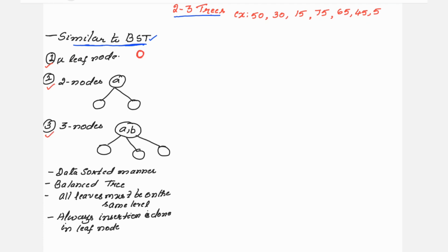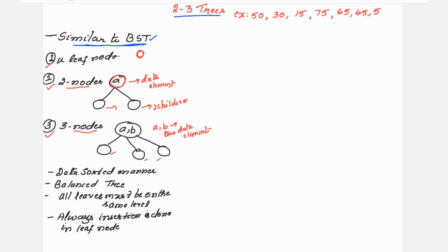A two-node has one data element and two children. A three-node has two data elements — A and B — and three children. Other properties of the two-to-three tree: data must be placed in sorted form, it is a balanced tree, all leaves must be on the same level, and insertion must be carried out at the leaf level only.